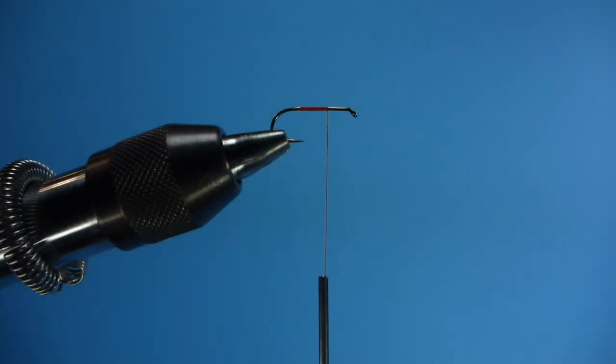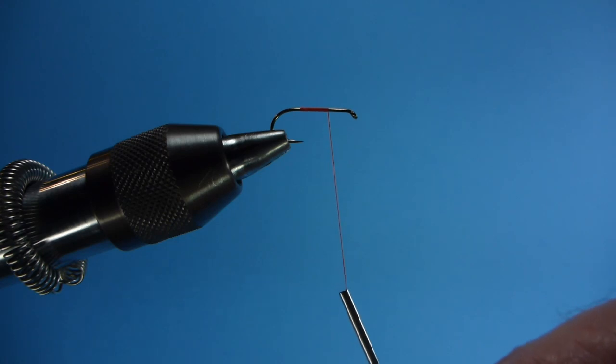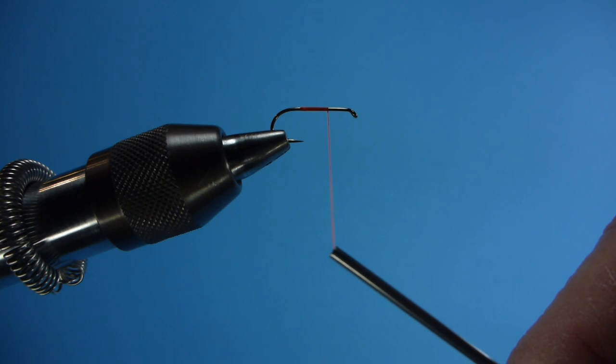Having an understanding of what thread twist can and cannot do is a real advantage in fly tying. For instance, in this situation, I've tied a reverse jam hitch, bringing my thread from the back of the hook toward the eye. Now I'm going to tie on a tail.